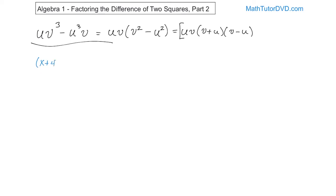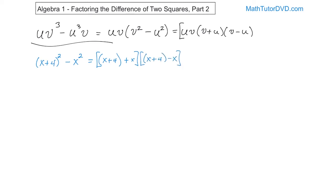What if I had x plus 4 squared minus x squared, and I was told to go ahead and factor that? You notice here I have a big term that's squared, and here I have an x that's squared — difference of two squares can look like this. All that matters is I have one term that is squared, and something else that's squared, and they're subtracted. The entire quantity is squared, so I treat this as the first item squared and this as the second squared. So it's going to be x plus 4, plus x, and then x plus 4 minus x.